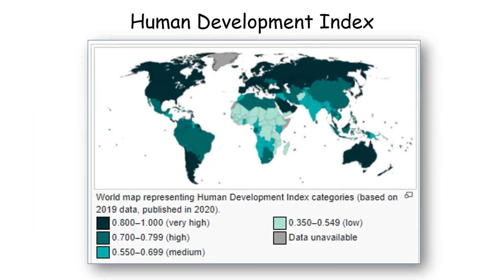On our next slide, this shows the Human Development Index. Again, we can see that development varies hugely, with countries of Western Europe, North America, Russia, Saudi Arabia, Australia, and New Zealand experiencing a very good quality of life. Whereas in Madagascar and countries of Central Africa, quality of life is not so good. In this PowerPoint, we're going to be trying to show why there's been such uneven development across the world.